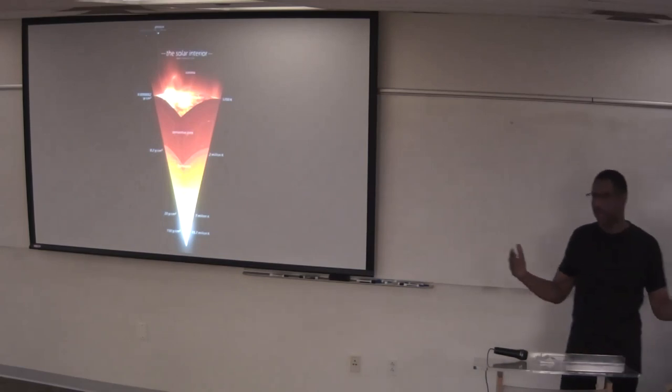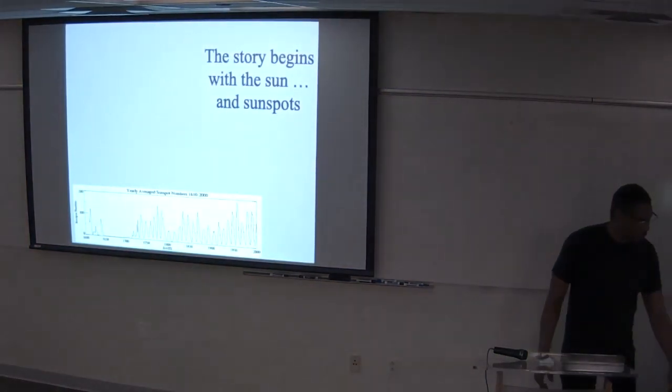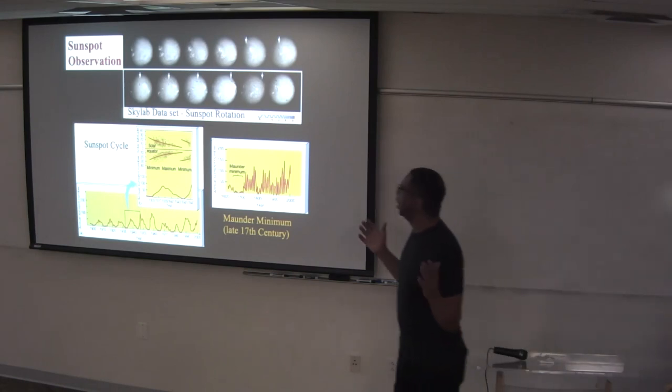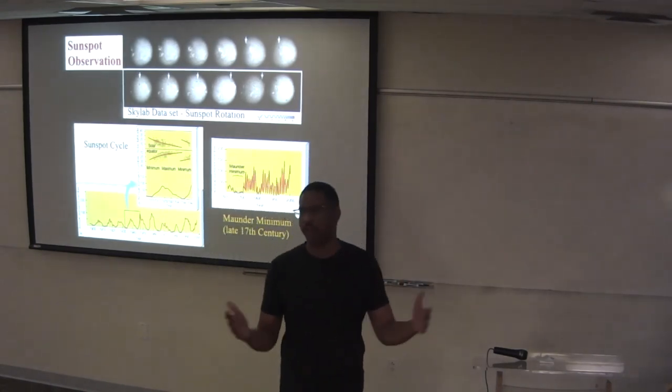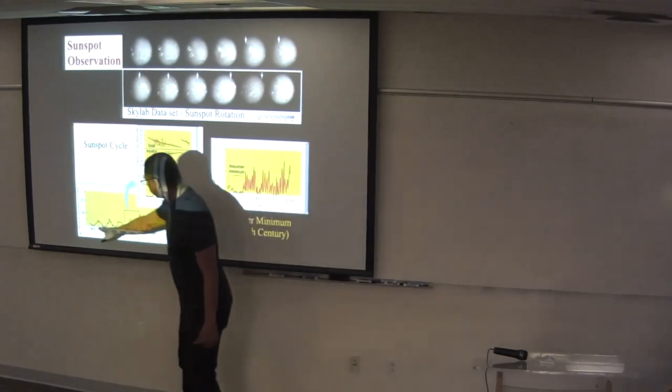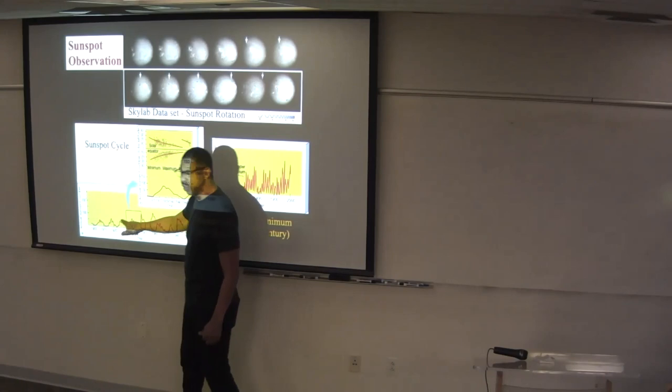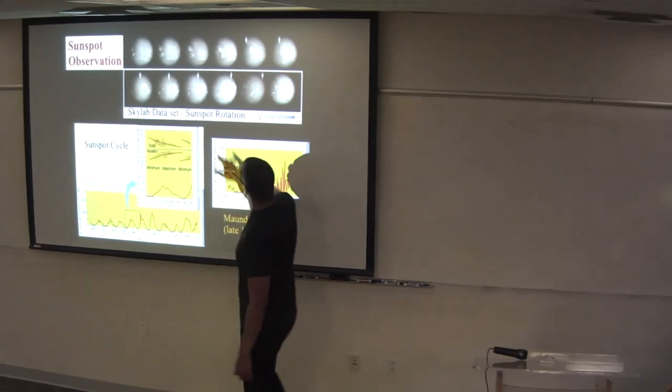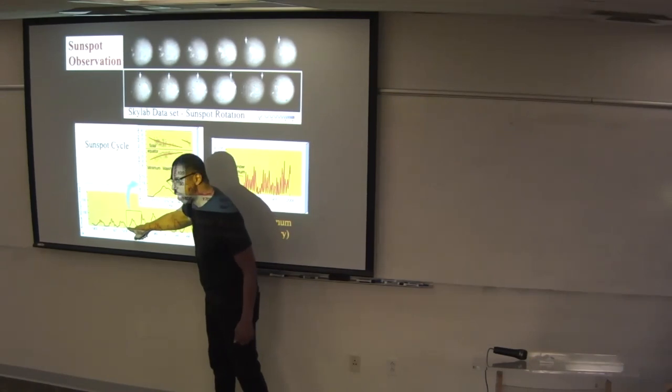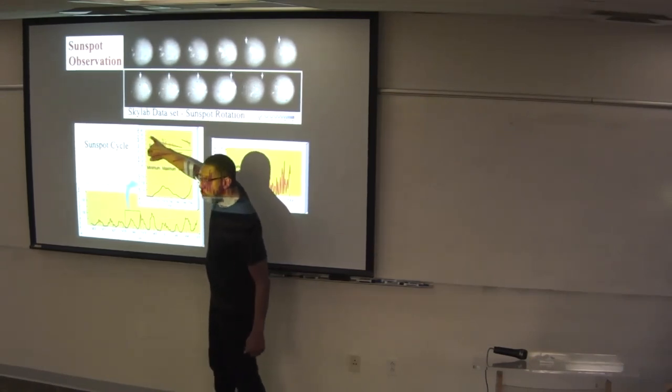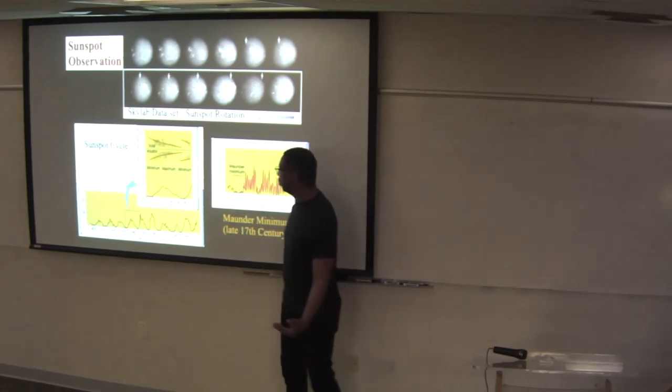When we first started studying the sun, the first thing that jumps out to us is sunspots. People counted the number of sunspots on the surface of the sun. They saw that the number of sunspots changed, and it went from a minimum to a maximum back to a minimum over the course of 11 years. When they first start showing up again, they show up near the pole, and then progressively they show up closer and closer to the sun's equator, and then they just disappear.